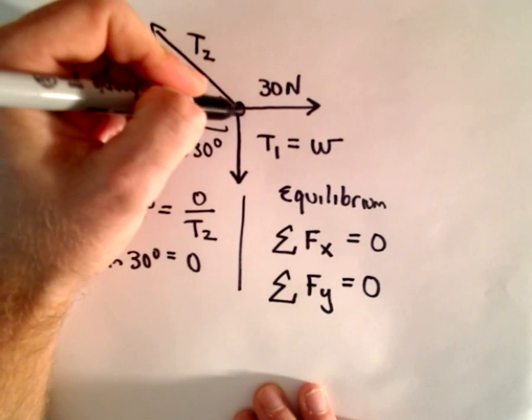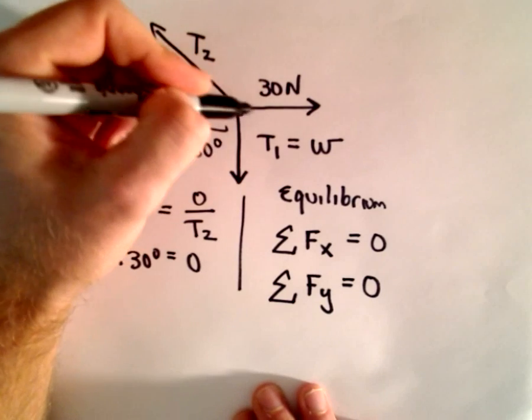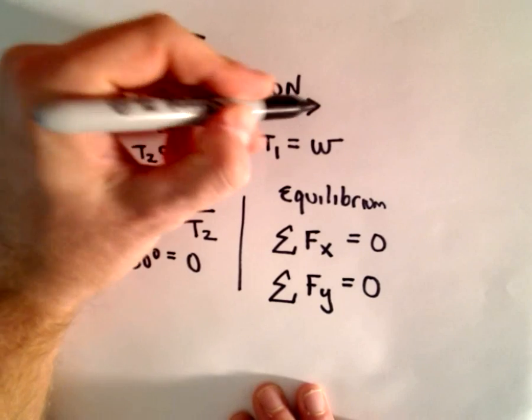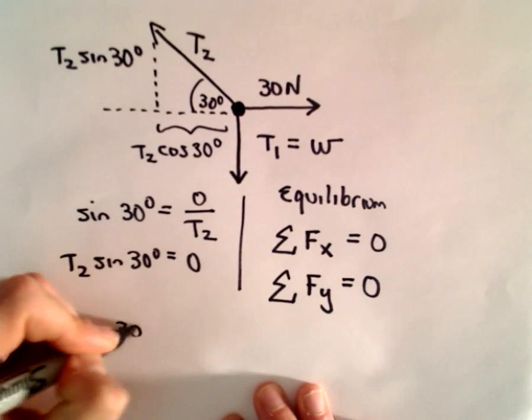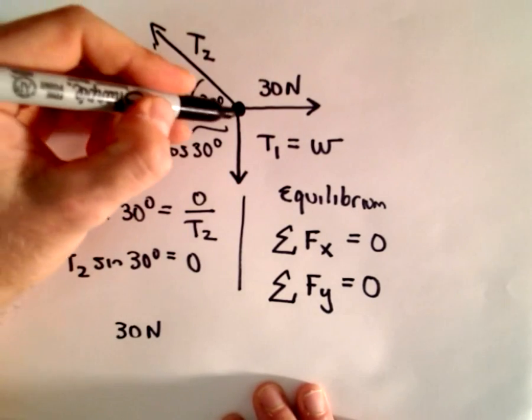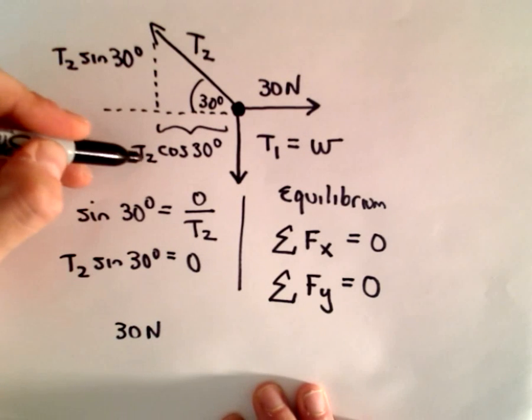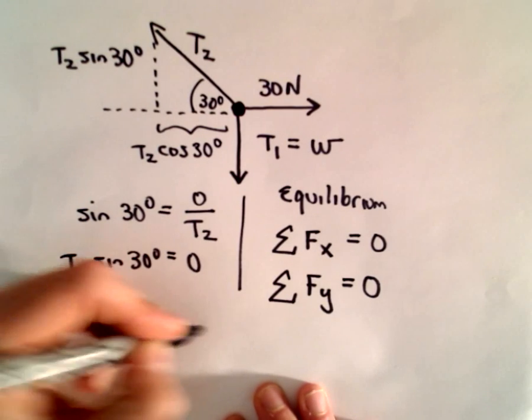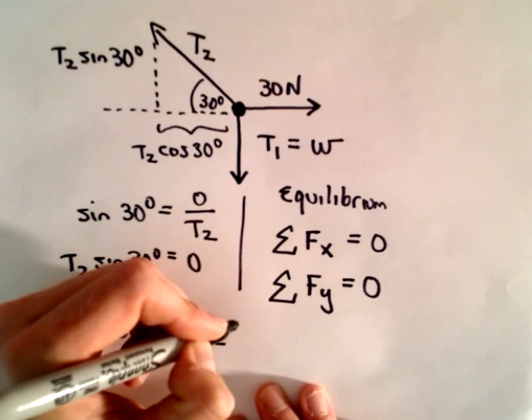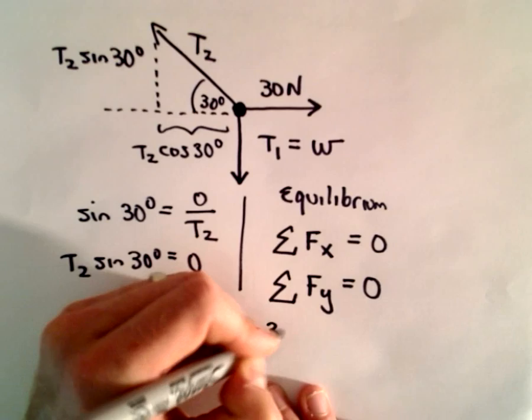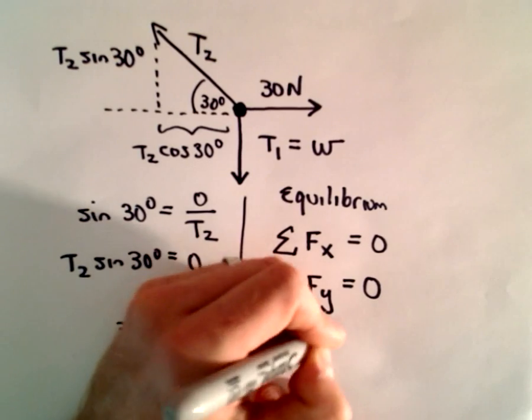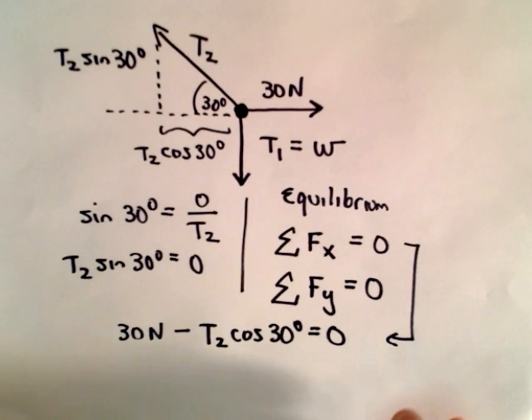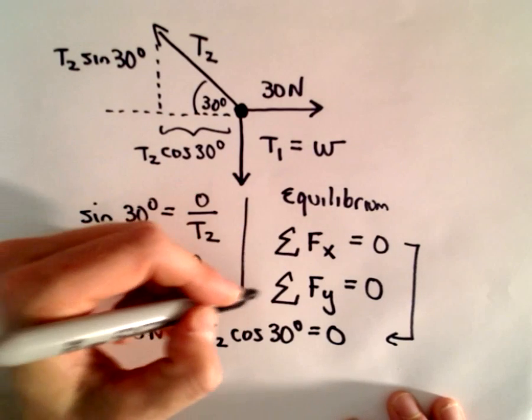So if we sum up the forces in the x direction, maybe I'll just make to the right positive, since that's kind of the typical convention. So to the right, we've got a force of 30 newtons. Well to the left, we have a force, we've got this T2 cosine 30 degrees, but since it's pointing to the left, we're going to make that negative. So we have 30 minus T2 times cosine of 30 degrees, that's going to equal zero. So that's our equation from our first observation here.